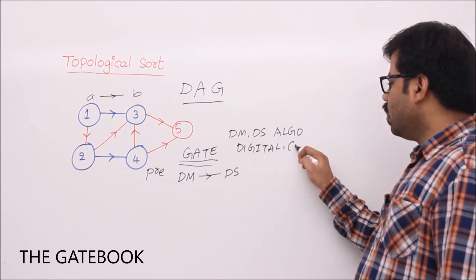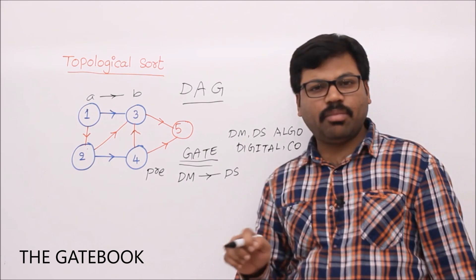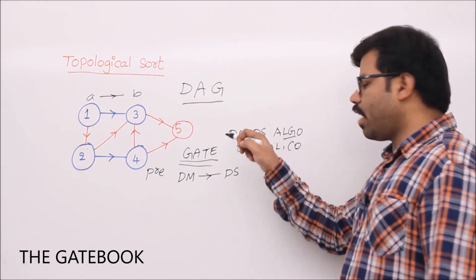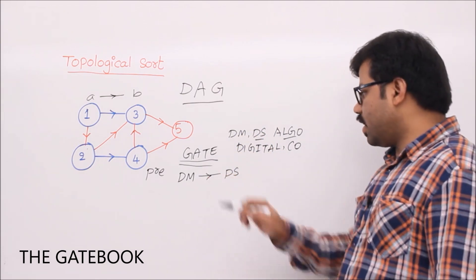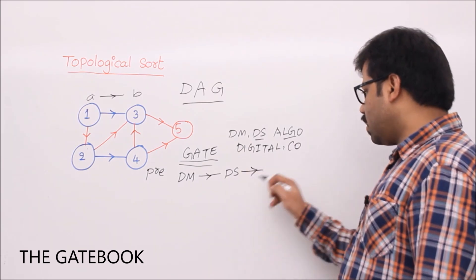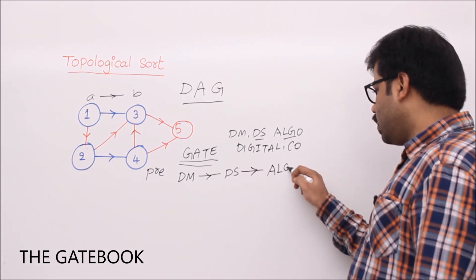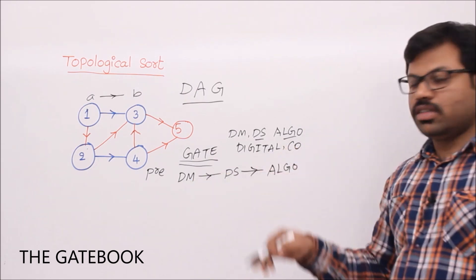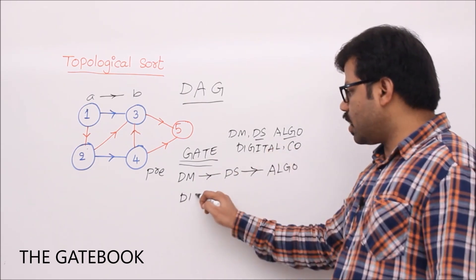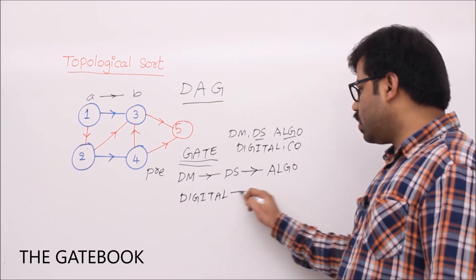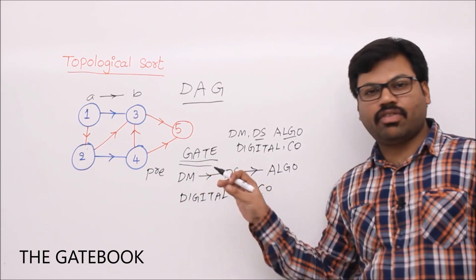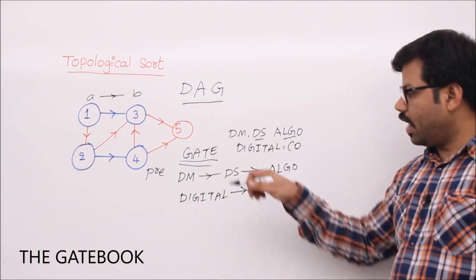Digital, let's say CO. Generally digital does not require any mathematics concept. For data structures and algorithms you require some graph knowledge, so the prerequisite is discrete maths. After discrete maths, go to data structures. After data structures, go for algorithms — then only you can understand algorithms clearly. Similarly, there is no relation between these three subjects and digital/CO. So learn digital first, after that go for CO. This kind of graph is called a directed acyclic graph.